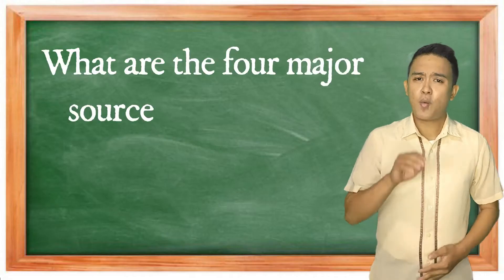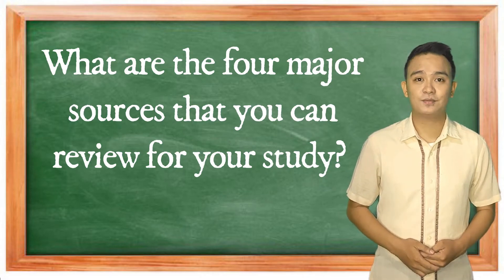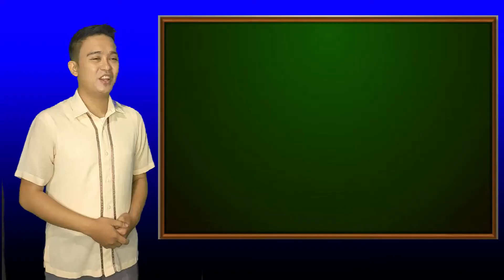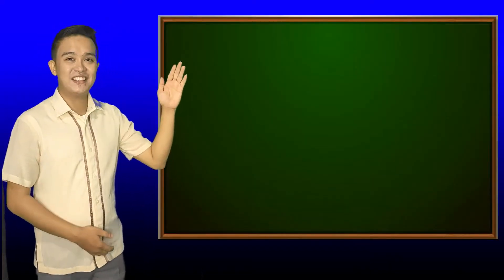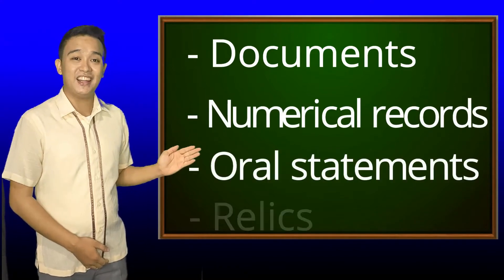Before we proceed to our new lesson, let us try to recall some highlights from your previous discussion. Let's start answering these questions. What are the four major sources that you can review for your study? That's right — we have documents, numerical records, oral statements, and relics.